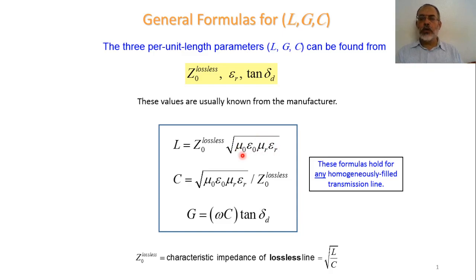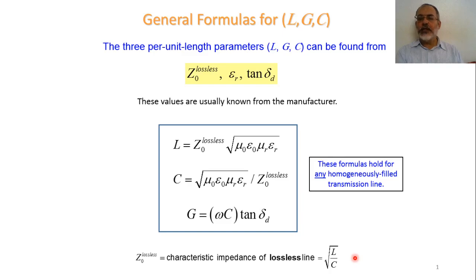This square root is equivalent to the square root of LC in the lossless transmission line. As mentioned, LC equals μ·ε, so the value of L can be determined as the square root of L/C multiplied by the square root of LC. The square root of L/C is the characteristic impedance, and the square root of LC is the square root of the permittivity of the material between the two wires. If we know Z₀ and ε_r, and we use non-magnetic material, we can find L.